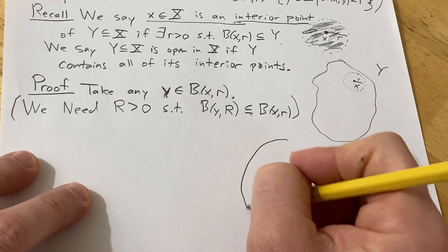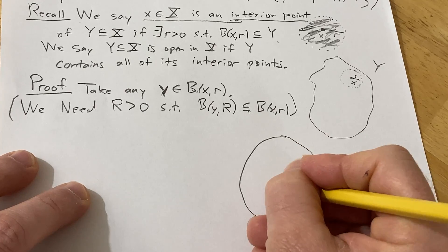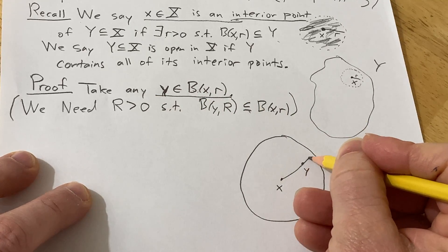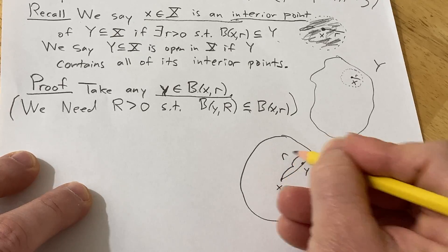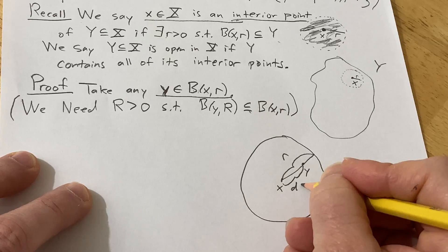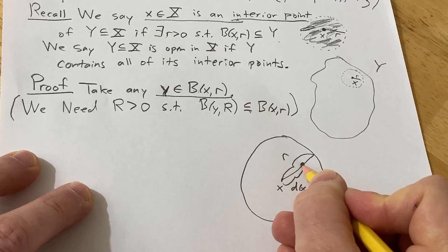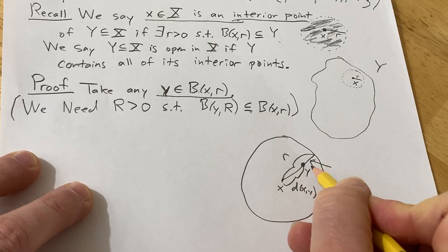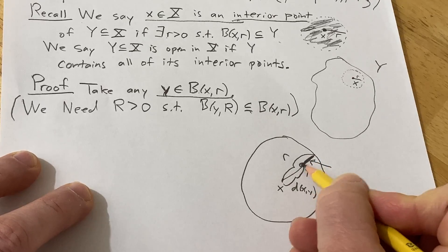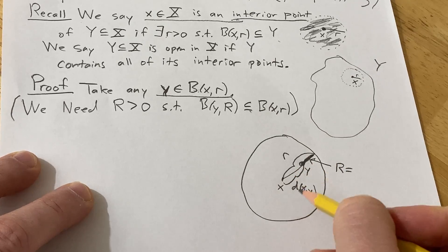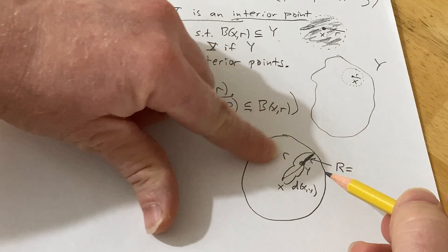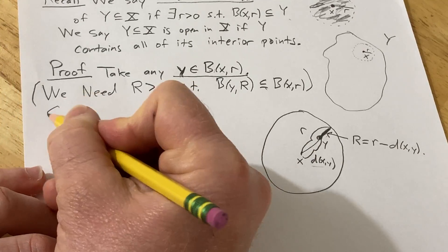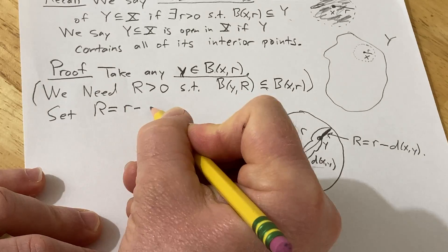Let's draw a picture. This is x, and let's pick a point y. This big distance is the radius r. This distance here is d(x,y). We want to find some open ball centered at y, so what is this radius? That's going to be the radius of our ball — let's call it capital R. Geometrically, we can see that R is r minus d(x,y). So set R equal to r minus d(x,y).